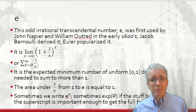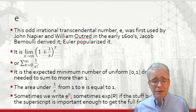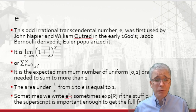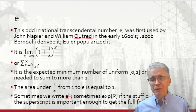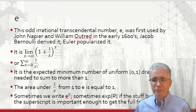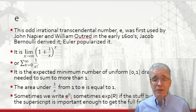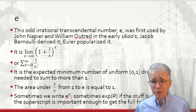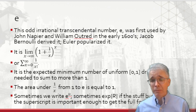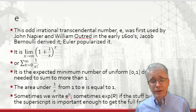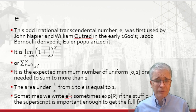The number e turns up in surprising places: the expected minimum number of uniform draws on (0,1) needed to sum to more than one is e in expectation, and the integral of 1/x from 1 to e equals 1. Once you notice it, it comes up all the time. We write it as e to the r power, or sometimes exp(r) when the exponent needs full font size. The inverse of e is the natural log — the natural log of e to the x is simply x, so the natural log undoes the operation of raising e to a power.